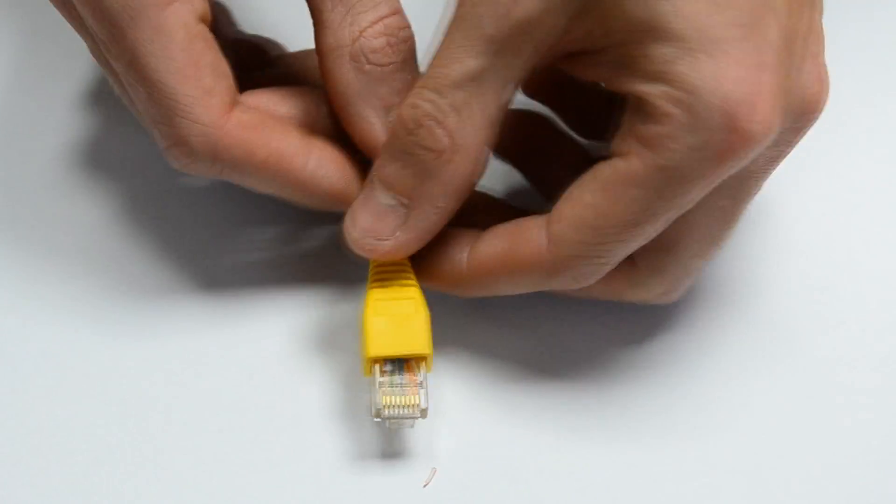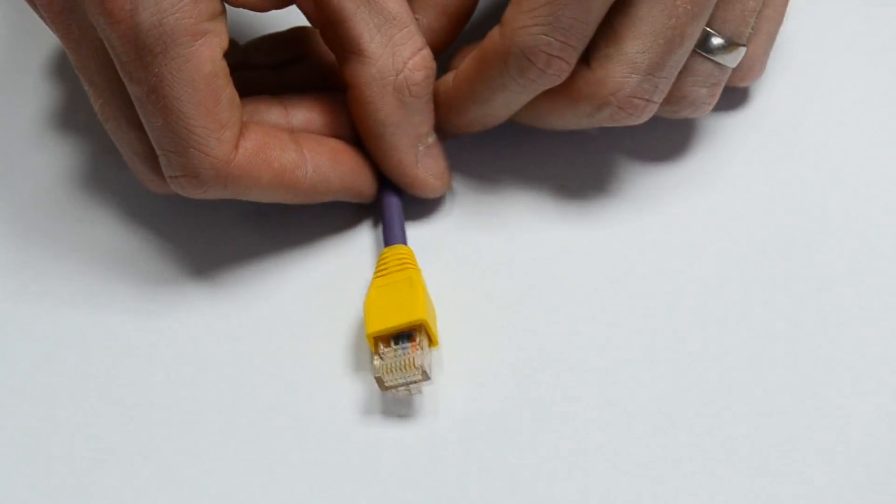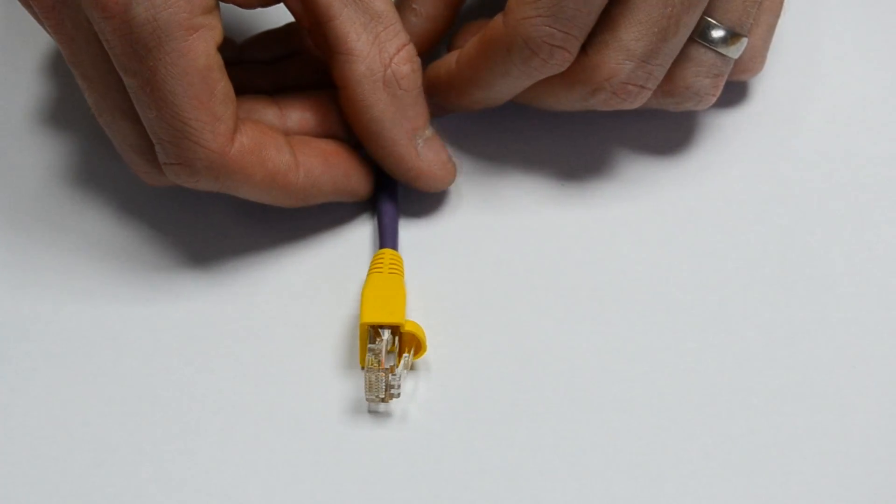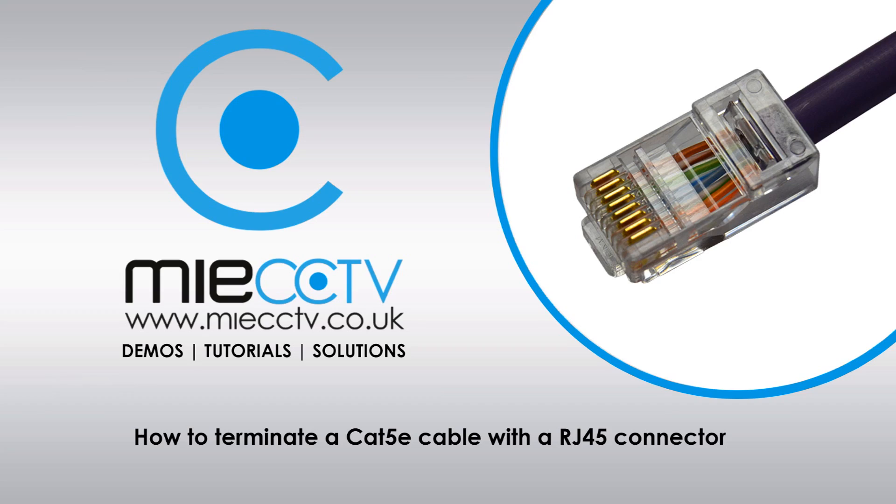You can now cover this with an optional boot. This completes this video tutorial. If you'd like to purchase some Cat5e cable you can purchase from the link in the description which is from MIECCDV.co.uk. You can use Cat5e cable for wiring your IP CCDV systems or running a cable from your DVR or MVR into your network router or switch. Thanks for watching.